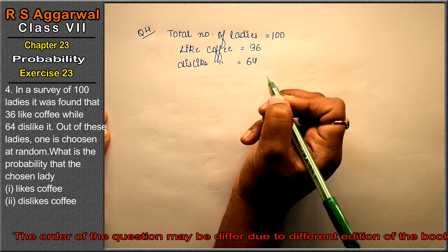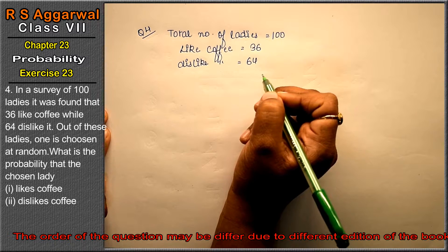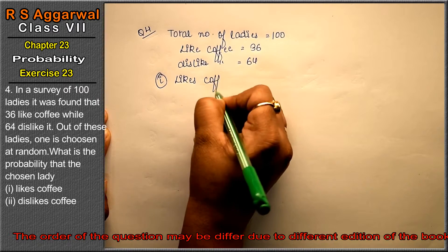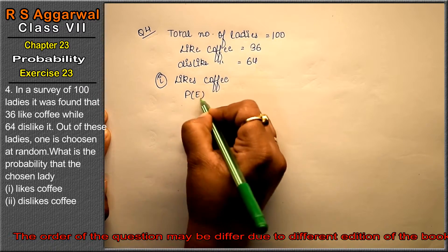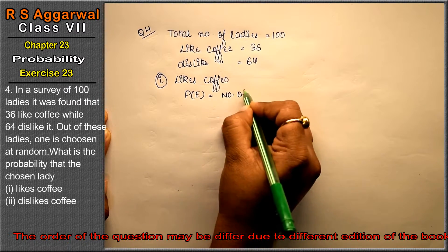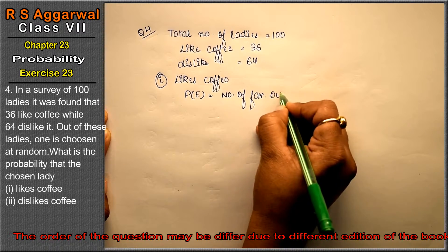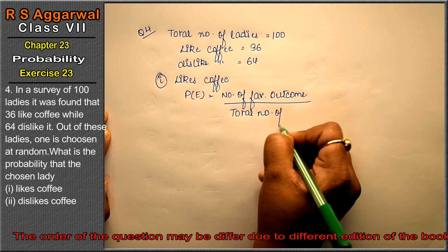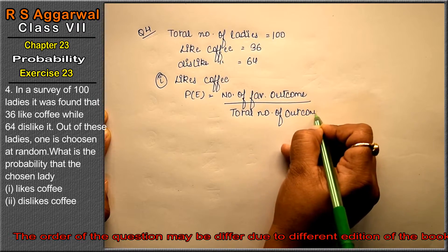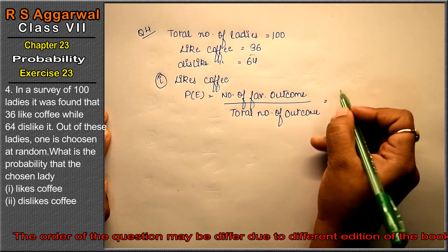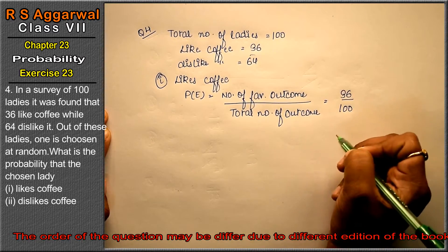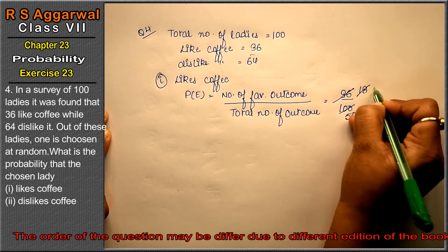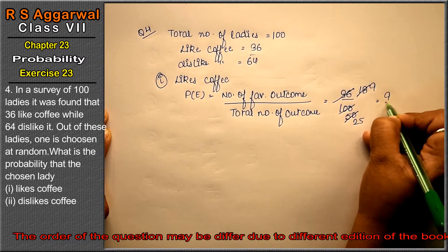Out of these ladies, one is chosen at random. What is the probability that the chosen lady likes coffee? Using the probability formula — number of favorable outcomes divided by total number of outcomes — those who liked coffee were 36 out of 100. Reducing: 2 eighteens are 36, 2 fifties are 100, giving 9 upon 25 as the answer.